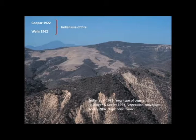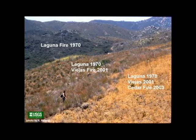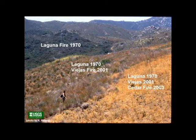A number of studies done in the last few decades have addressed type conversion. Probably the earliest is a paper by Paul Zedler and his students, who described a new type of vegetation being created because of excessive numbers of fires on a given site. A student of mine and I published a paper in the early 90s referencing vegetation conversion. The first use of the actual term 'type conversion' I can identify was in a paper I did in the early 2000s dealing with Native American use of fire.